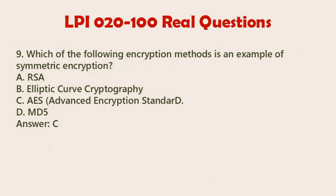Question 9. The correct answer is C: AES, Advanced Encryption Standard. AES is an example of symmetric encryption. In symmetric encryption, the same key is used for both encryption and decryption processes. AES is widely used for securing sensitive data and communications because of its efficiency and security.